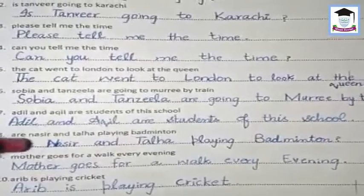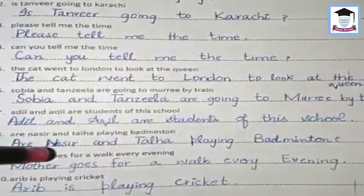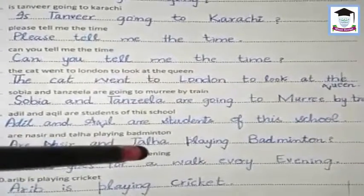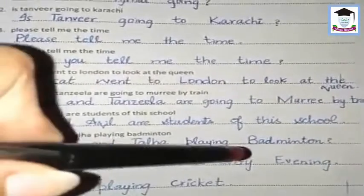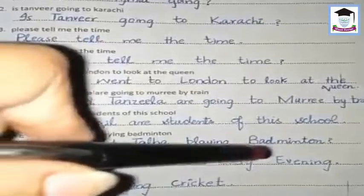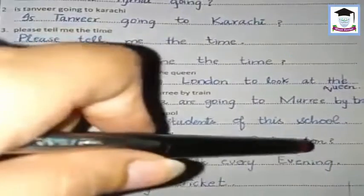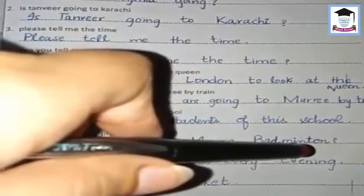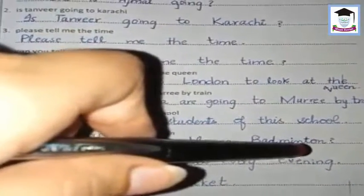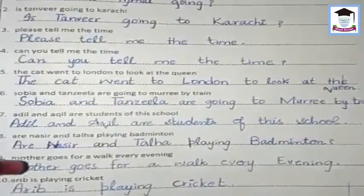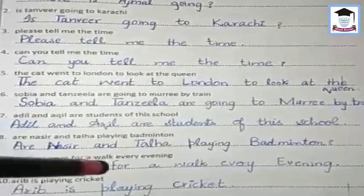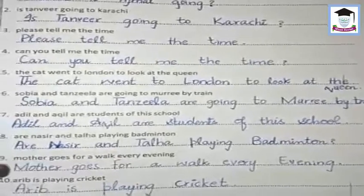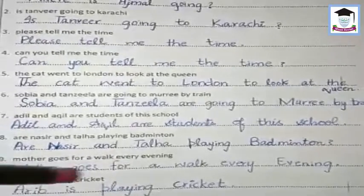'Are' — 'A' is capital, Nasar's 'N' is capital, Talha's 'T' is capital, badminton's 'B' is capital. At the end put a question mark. The ninth sentence: 'Mother goes for a walk every evening.' — Mother's 'M' is capital.